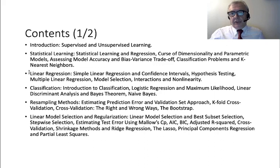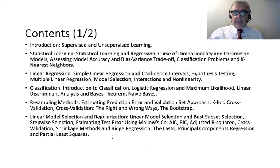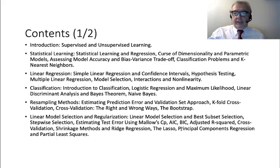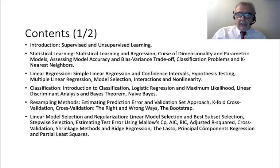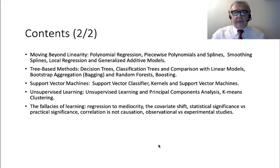We will then treat classification with important methods: logistic regression and linear discriminant analysis, naive Bayes, and a rather extensive discussion of resampling methods — cross-validation and the bootstrap. A very important chapter covers linear model selection and regularization, including methods for choosing the best model, regularization-based estimation, LASSO, principal components regression, and partial least squares.